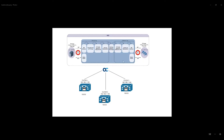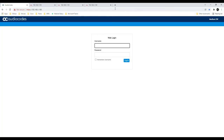I have done the basic SIP trunking from the call manager clusters towards AudioCodes. The AudioCodes IP is 192.168.1.180. I have created three different phones — one registered to each cluster. After configuration, we will test call routing between call managers A, B, and C using AudioCodes.